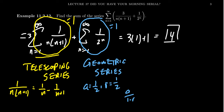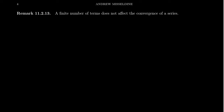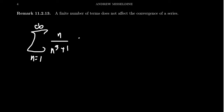We can use properties of series to compute more complicated series by comparing them to simpler ones. One last important property: a finite number of terms does not affect the convergence of a series. Consider the series from n equals 1 to infinity of n over n^3 plus 1. If we expand this, the first term is 1/2, the second term is 2/9, the third term is 3/28, and so on.